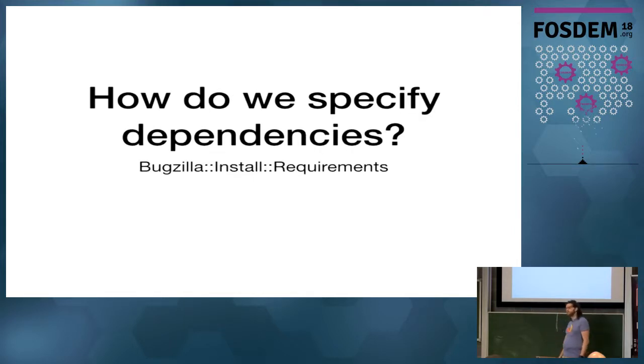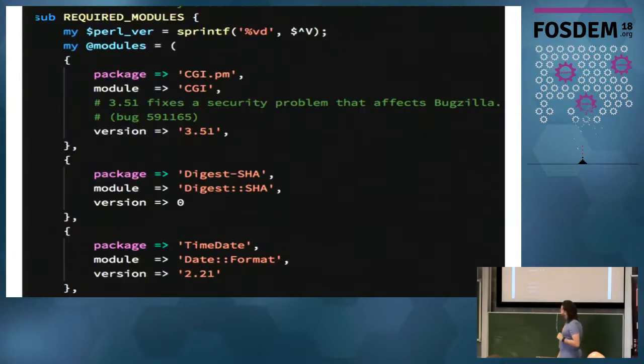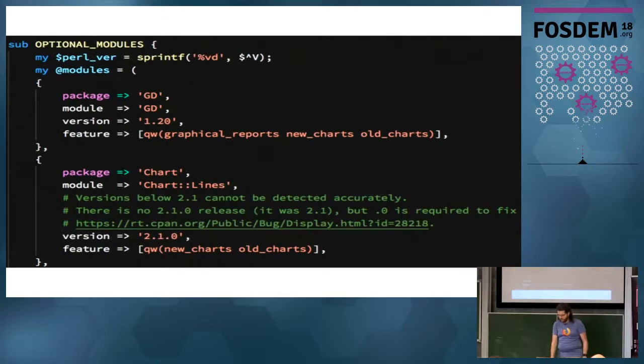How do we specify dependencies? Bugzilla had its own way of specifying dependencies, which was a constant defined in some module. And it was kind of interesting because it specified the package name, the module name, and also the distribution name. And as far as I know, there's not a one-to-one mapping, but most people don't care about the distribution name.